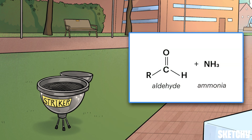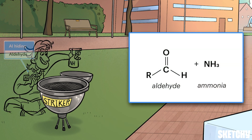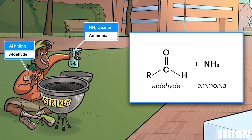This process starts with an aldehyde and ammonia reacting. Al's hiding behind the grill with a bottle of ammonia cleaner — stealth cleaning wouldn't be my first choice for extracurricular fun, but to each their own. The ammonia in this first step usually comes from ammonium chloride salt. Then on the aldehyde, the identity of the R group determines the side chain of the amino acid, and therefore which amino acid is ultimately made.